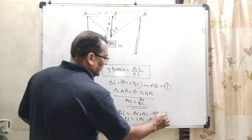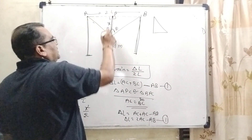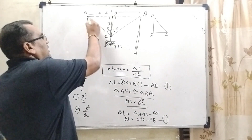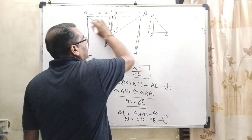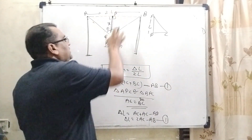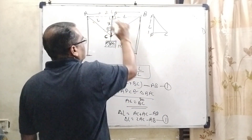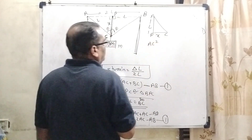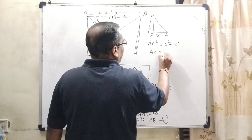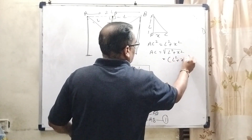Now we have redrawn triangle APC. Here AP is L, because the total distance is 2L and these triangles are congruent, so this side is L and this side is L. By using Pythagoras' theorem: AC² = L² + X². Therefore AC = √(L² + X²), or equivalently (L² + X²)^(1/2).